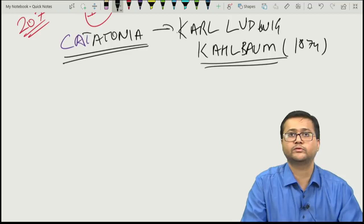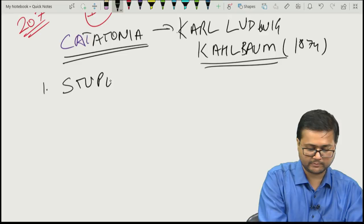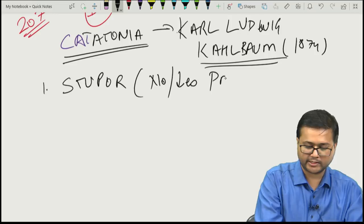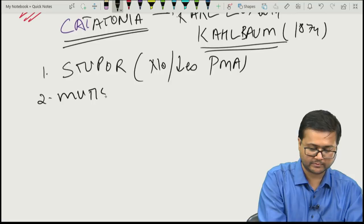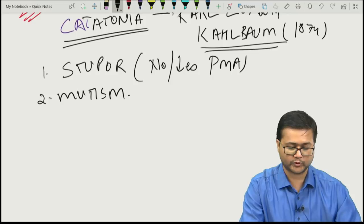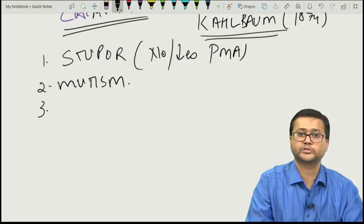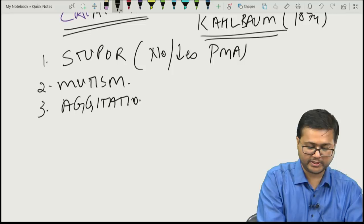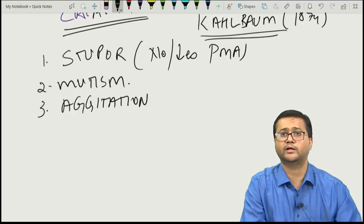There may be stupor — no or decreased psychomotor activity — then mutism — no or very little verbal output from the patient. Opposite to stupor, there may be marked agitation or extreme excitement with very significantly increased psychomotor activity.